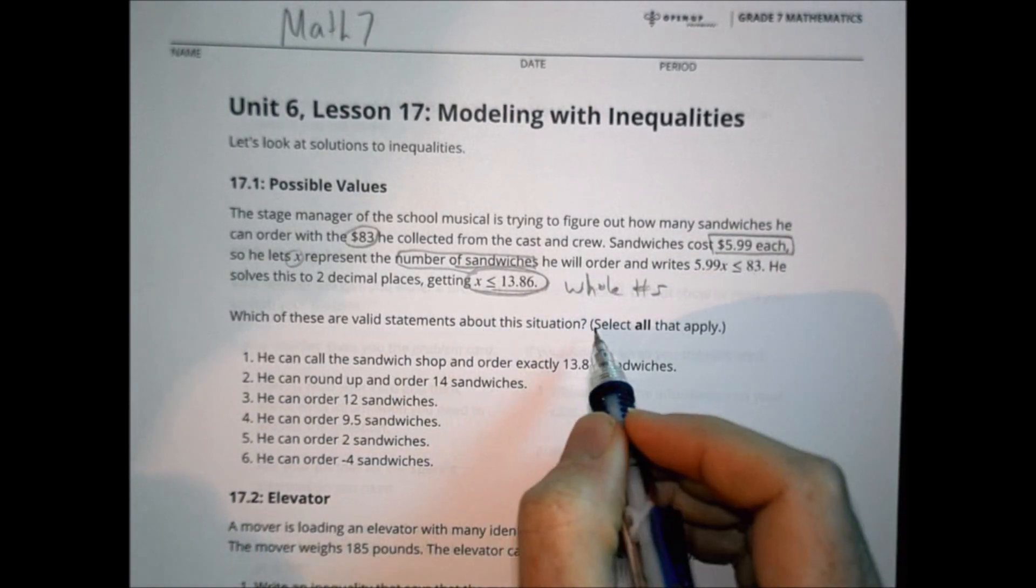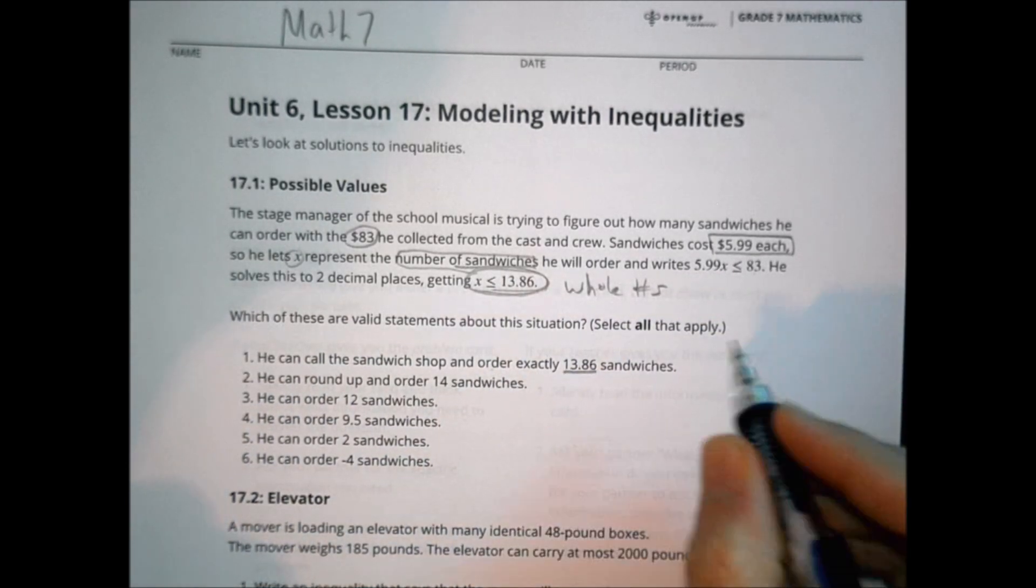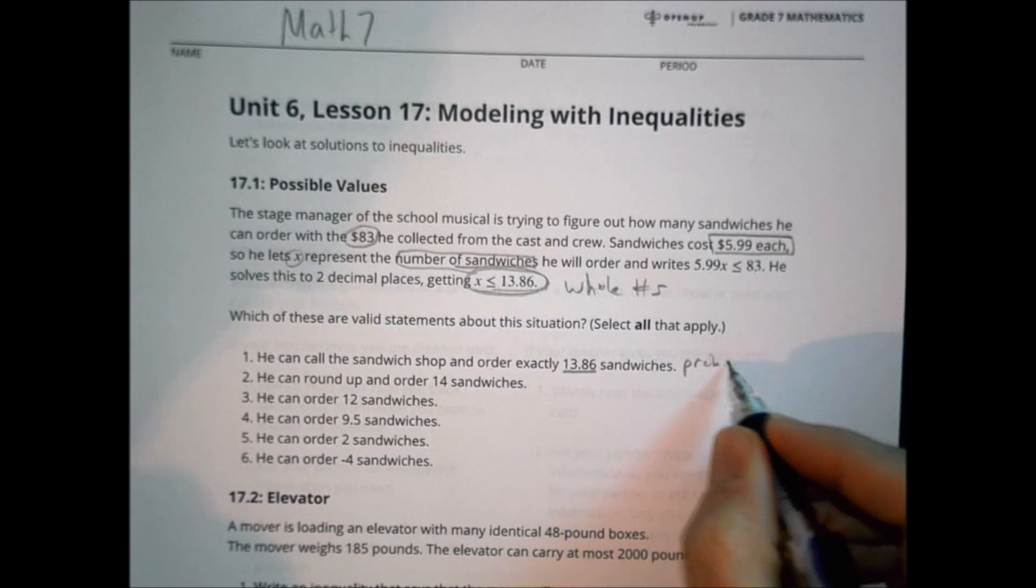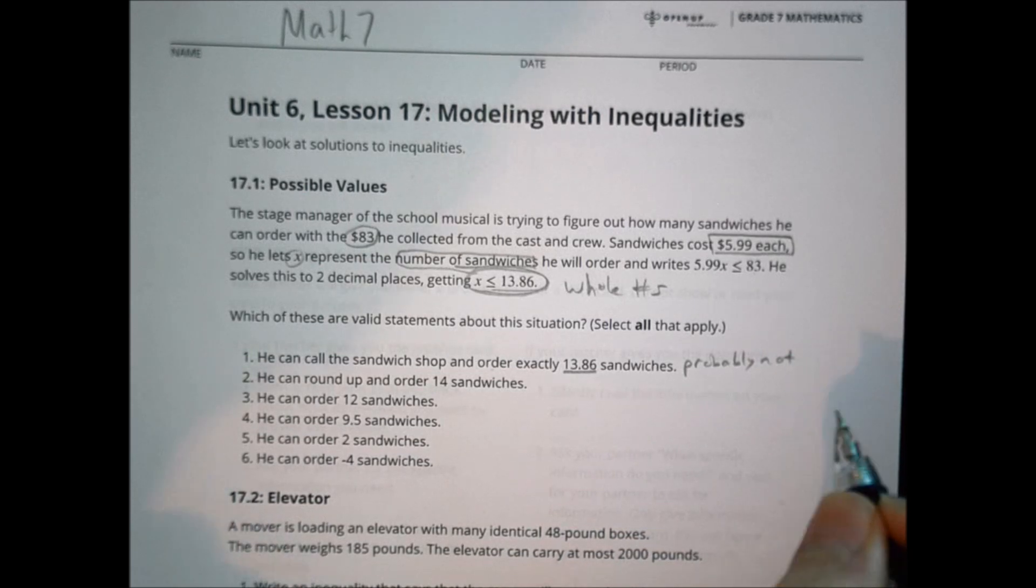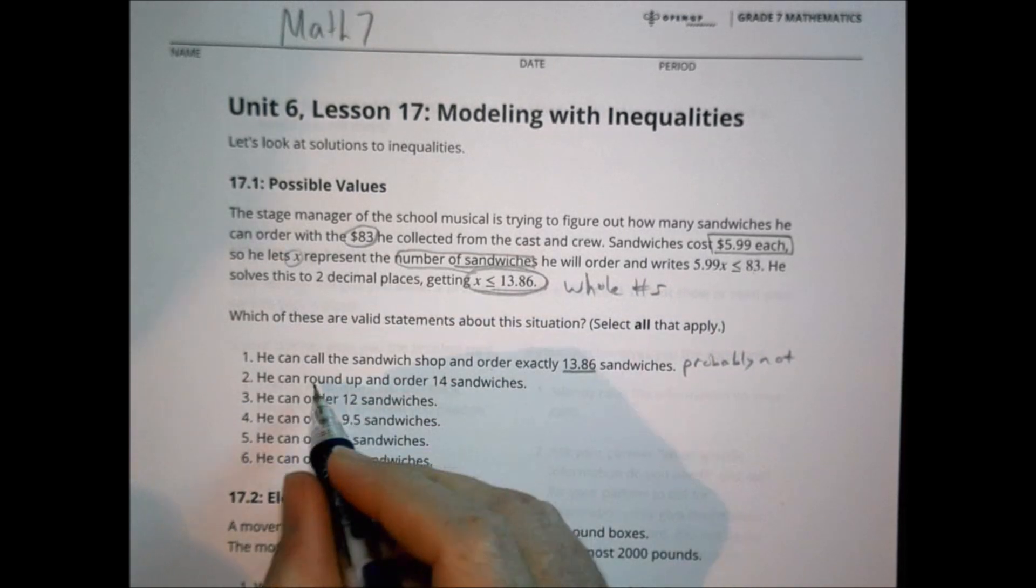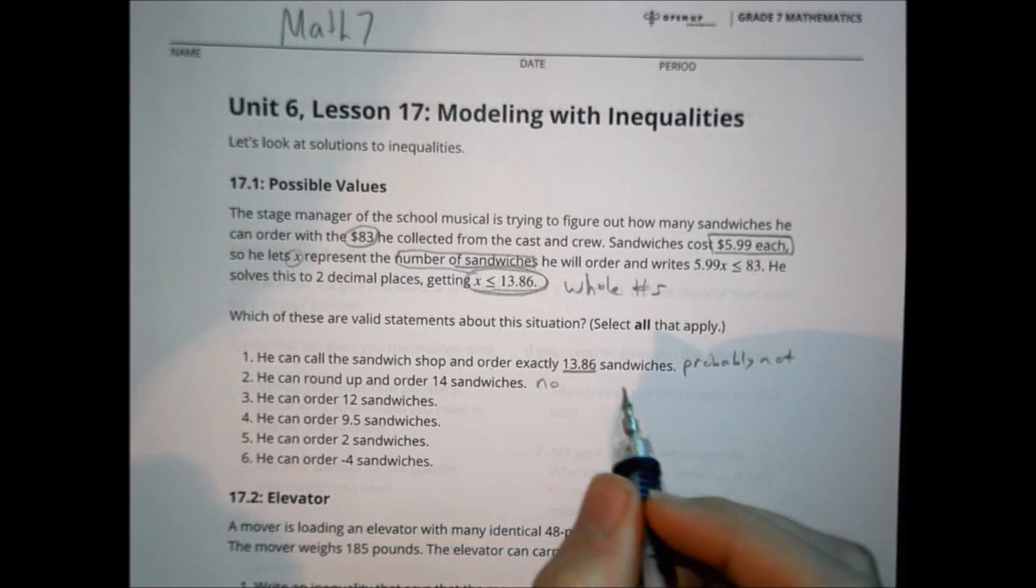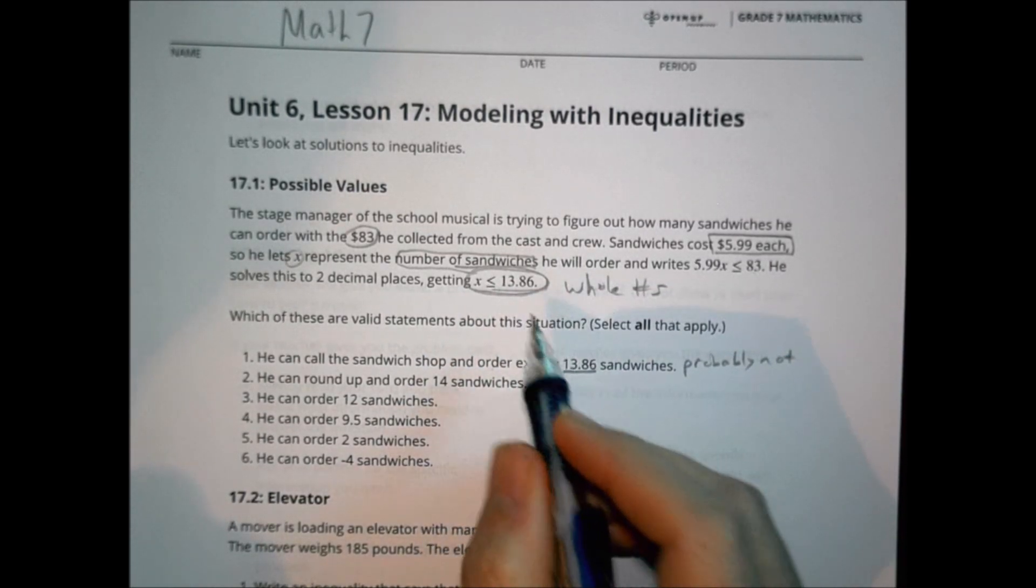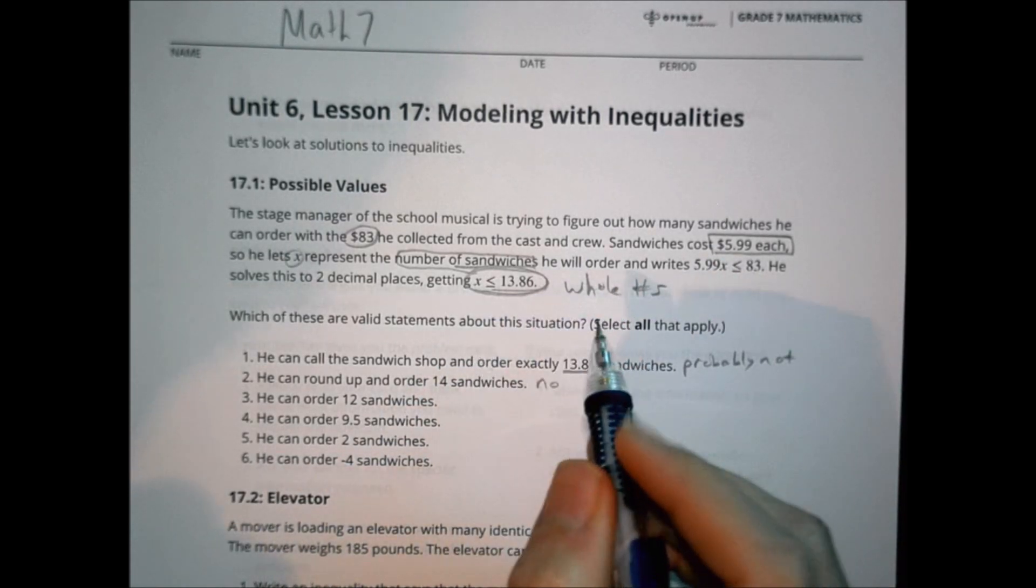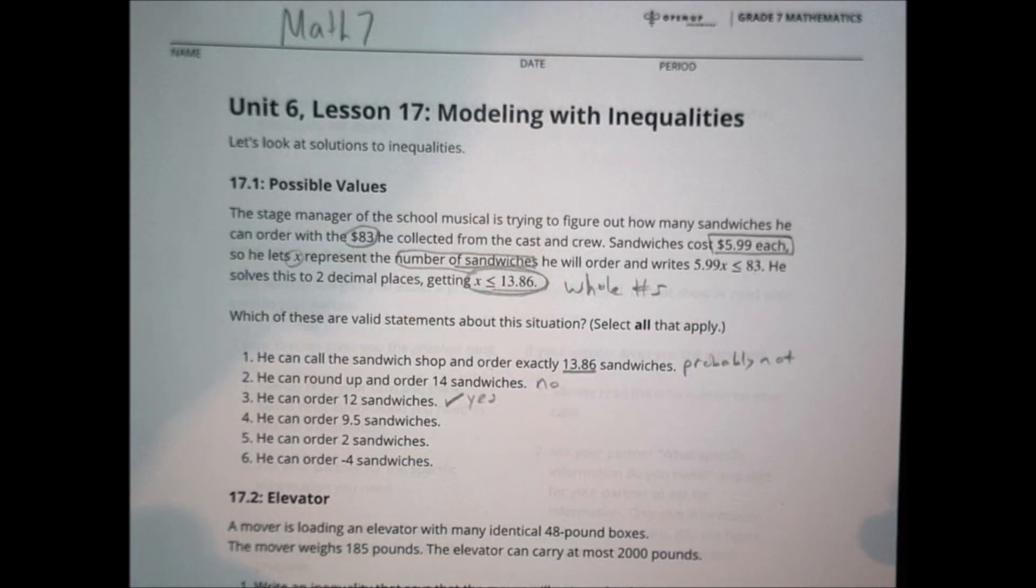So which of these are valid statements? He can call the sandwich shop and order exactly 13.86 sandwiches? Probably not. The sandwich shop would probably not give him 0.86 of a sandwich. Can he round up and order 14 sandwiches? This would be a no, because that's going to be too big. It has to stay under 13.86. Can he order 12? Yes, he can order 12 for sure and have a little extra money left.